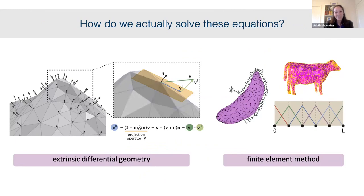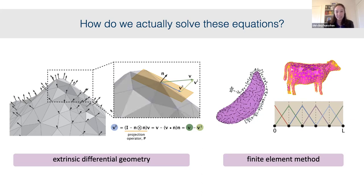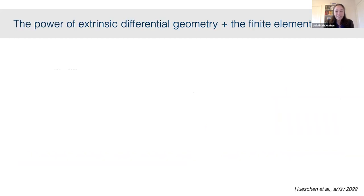It's one thing to solve these self-organization equations on a planar surface and another to predict patterns on the real Toxoplasma cell geometry. We used an extrinsic differential geometry approach to derive a general curved-surface formulation of our Toner-Tu self-organization equations, which can handle any arbitrary curved surface described by a field of normal vectors. We then use the finite element method to solve these equations on complex surface geometries.